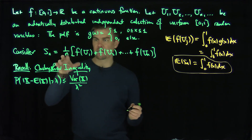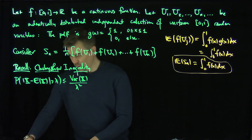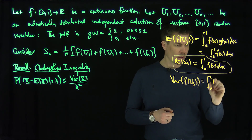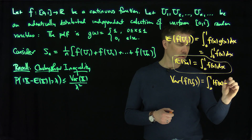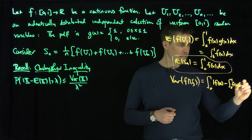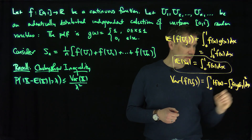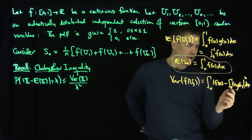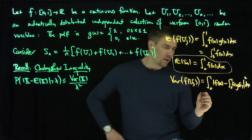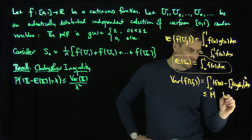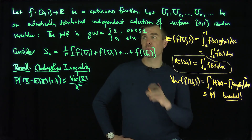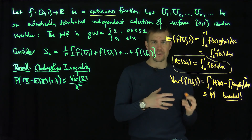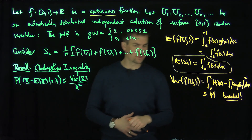Now I'd like to estimate the variance. The variance of any one f(uj) is the integral from 0 to 1 of [f(x) minus the integral from 0 to 1 of f(y) dy] squared dx — in other words, how far away is the function from its average value. Since f is bounded — continuous functions on a compact set are bounded — this variance is bounded by some constant m. And that's where the continuity of the function comes into play; one could make a weaker L2 assumption to reduce the continuity requirement.